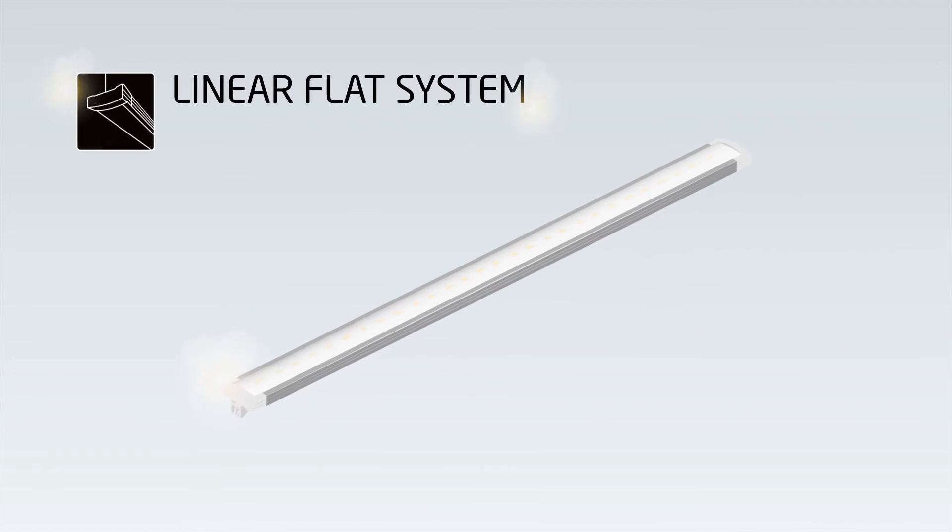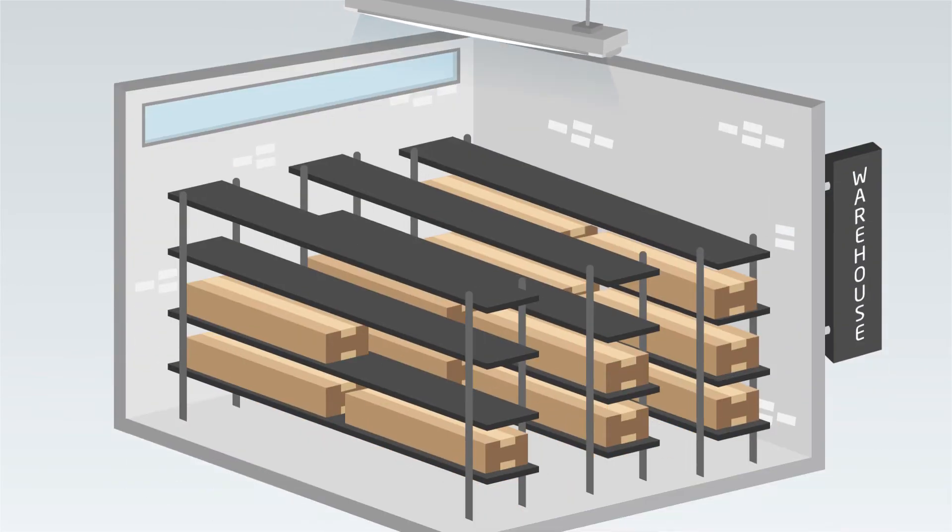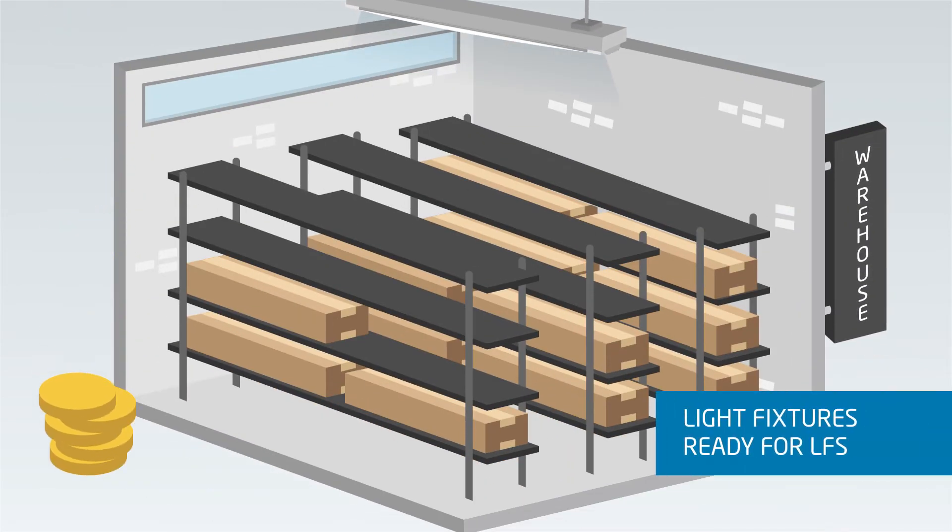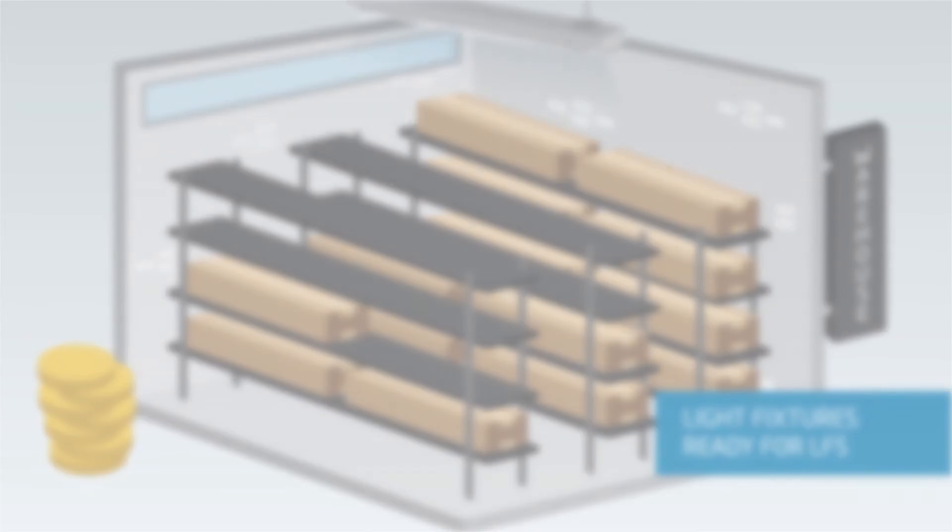Advanced light fixtures with the LFS linear flat system are socketable and interchangeable. Perfect for built-to-order assembly, unpopulated luminaire housings can be mass-produced in advance with the customer-specified lights installed just before delivery.